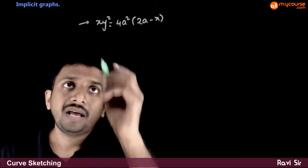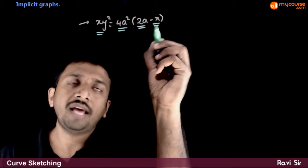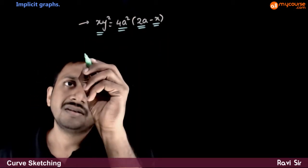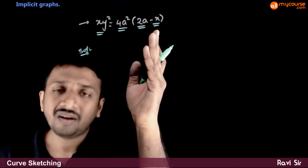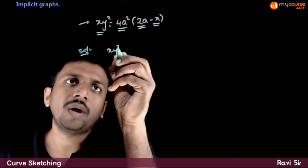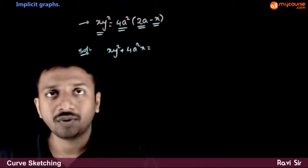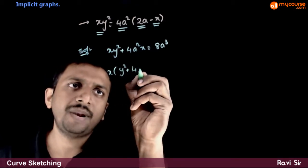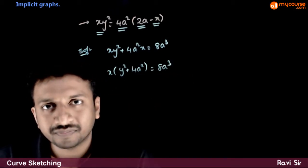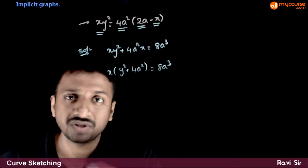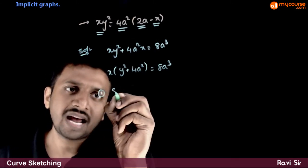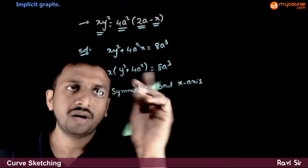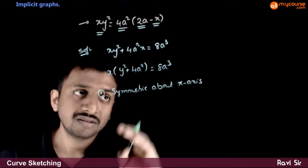Next, let us draw the graph of xy² = 4a²(2a - x). This looks like an implicit function — x appears on both sides. We bring all x terms together: xy² + 4a²x = 8a³, so x(y² + 4a²) = 8a³. Observing this form, one conclusion is that the graph is symmetric about the x-axis, because replacing y with -y does not change the equation.